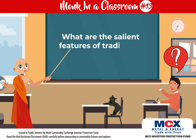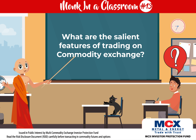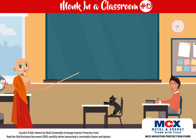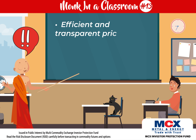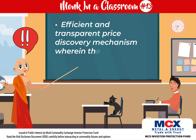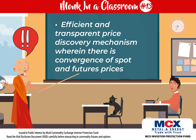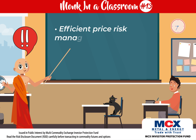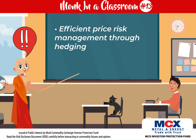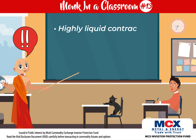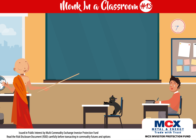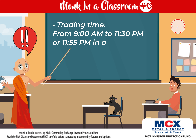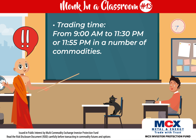What are the salient features of trading on the commodity exchange? A wide range of commodities, efficient and transparent price discovery mechanism with convergence of spot and futures prices, efficient price risk management through hedging, and highly liquid contracts. Trading time is from 9 a.m. to 11:30 p.m. or 11:55 p.m. in a number of commodities.